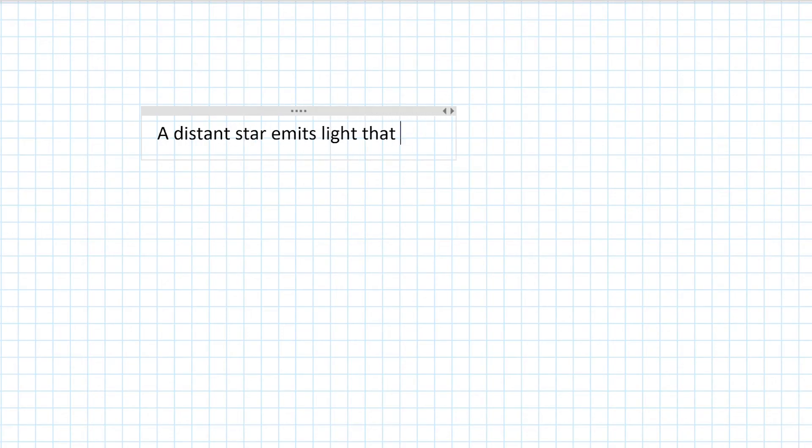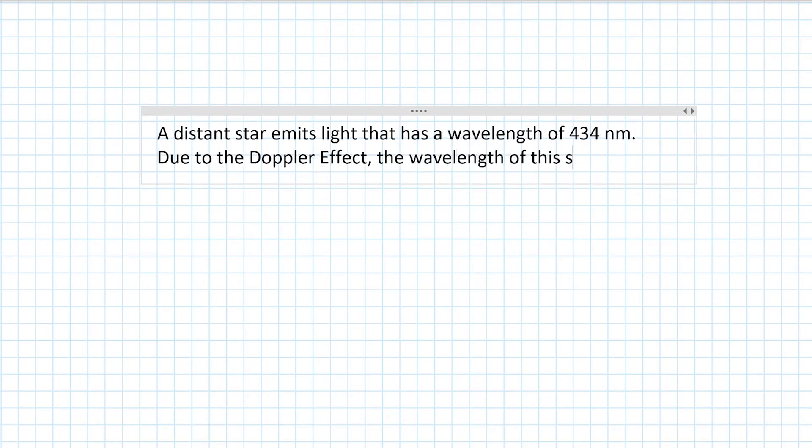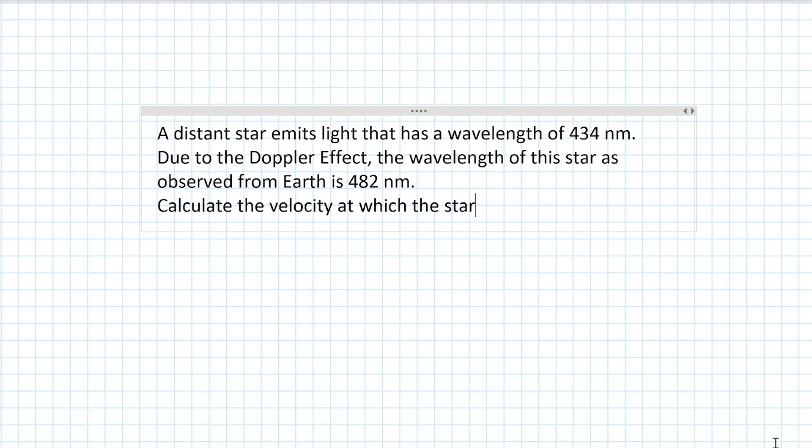A distant star emits light that has a wavelength of 434 nanometers. Due to the Doppler effect, the wavelength of this star as observed from Earth is 482 nanometers. Calculate the velocity at which the star is moving relative to the Earth. The speed of light is 3 times 10 to the power of 8 meters per second.